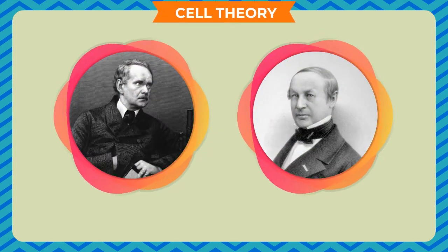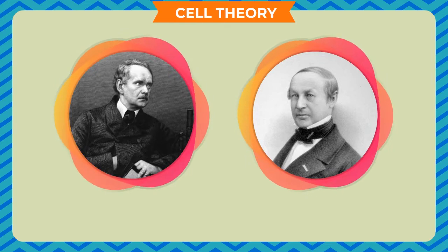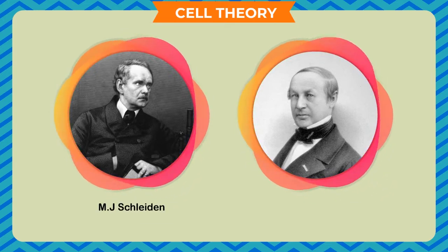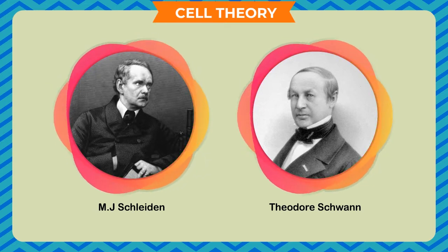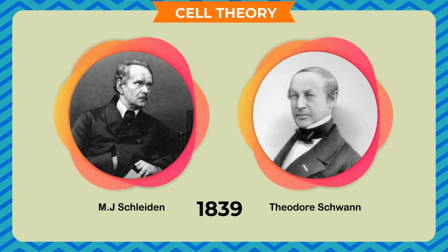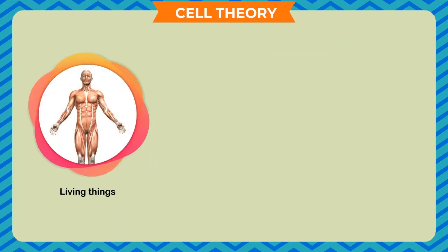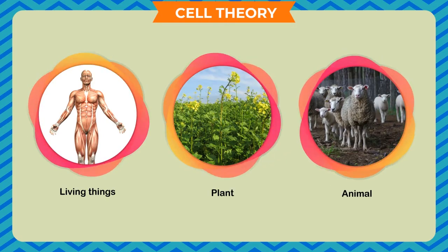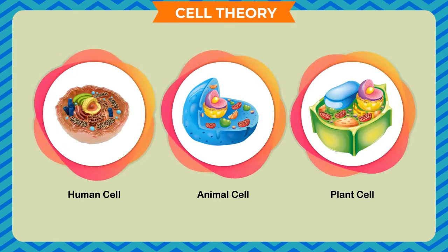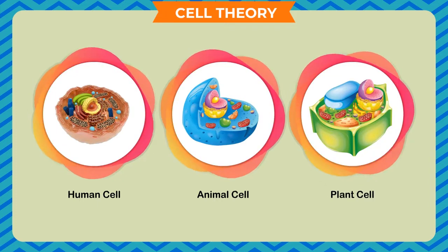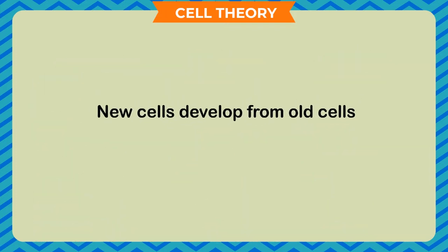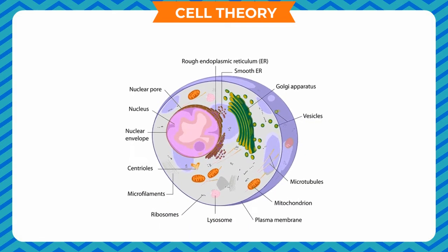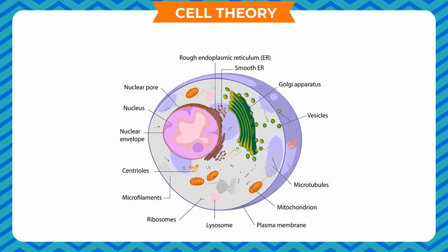The cell theory was put forward by two German scientists, Matthias Jacob Schleiden and Theodor Schwann in 1839. According to this theory, all living things, whether plants or animals, are made up of cells. All cells are similar in basic structure but functions are different. New cells develop from old cells. The function of cell depends on the way an organism works.